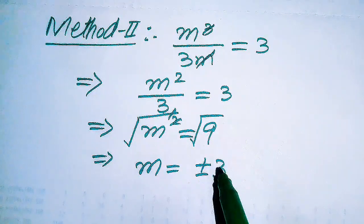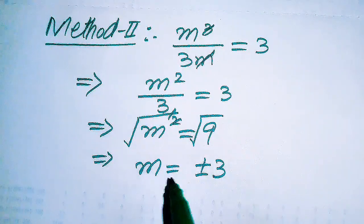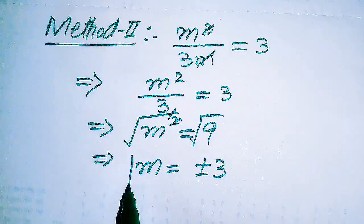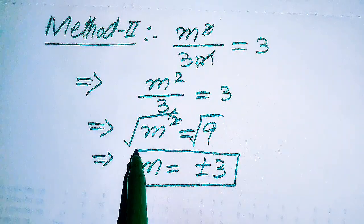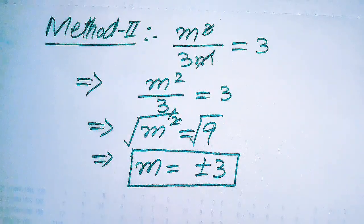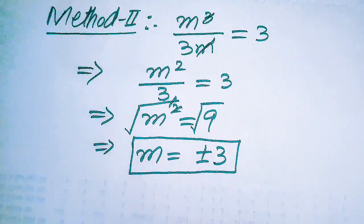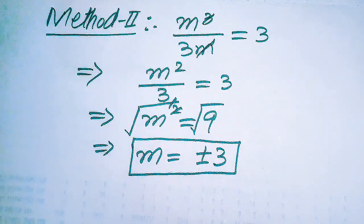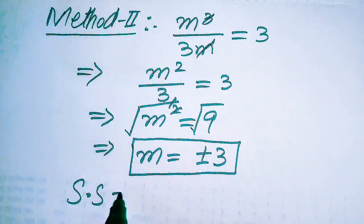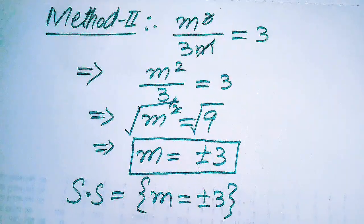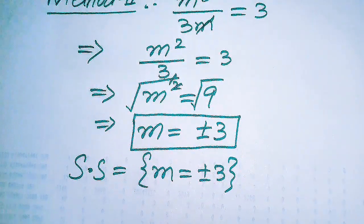To find the value of m we take the square root on both sides. The square and square root cancel, giving m equals plus or minus the square root of 9, which is plus or minus 3. Using the second method we get two values of m: plus or minus 3. Since we already verified in the first method that these values satisfy the equation, the final solution set is m equals plus or minus 3.